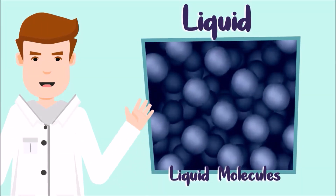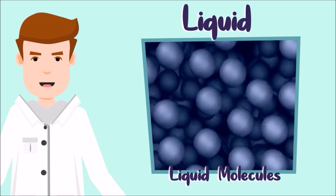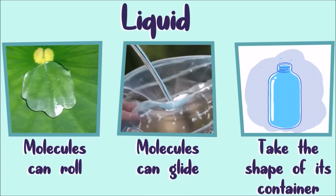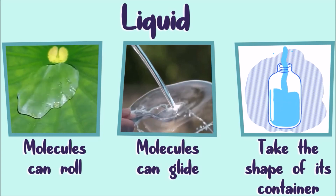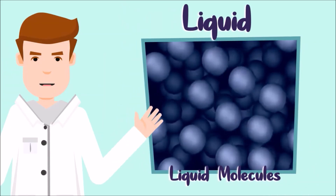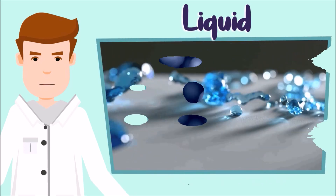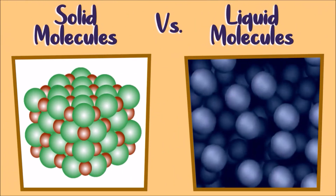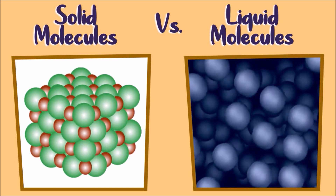In liquids, molecules are loosely packed and have spaces in between, so the molecules can roll, glide, and take the shape of their container. The molecules of liquid are slightly apart from each other, so they flow freely. The forces in molecules of liquid are not as strong as in solid.